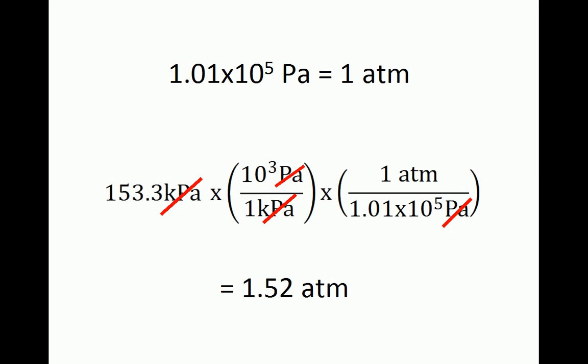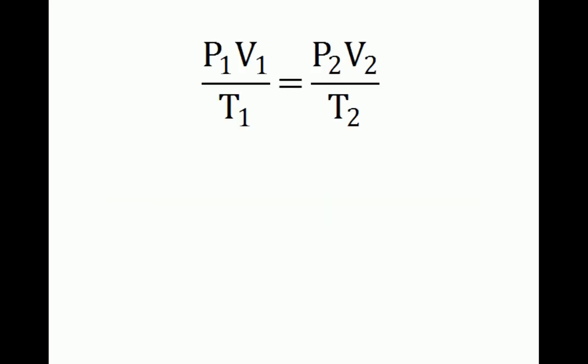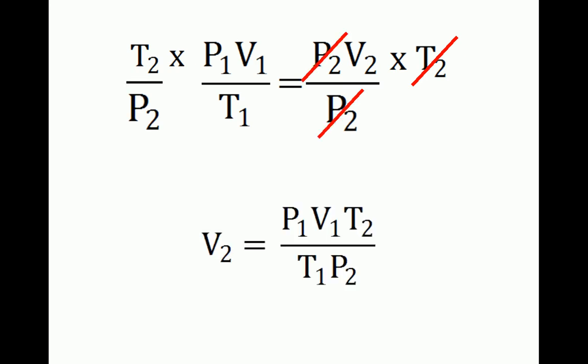Before we plug any numbers into the equation, we will rearrange the combined gas law equation to solve for V2. First, we will multiply both sides by T2, and then divide both sides by P2. After canceling terms out, the equation becomes V2 equals P1 V1 T2 over T1 P2.